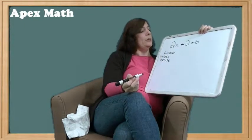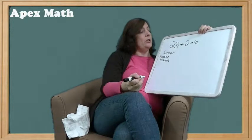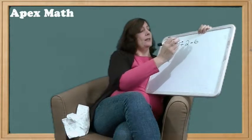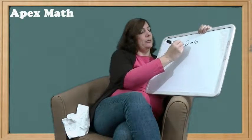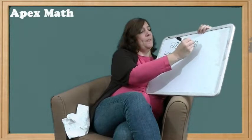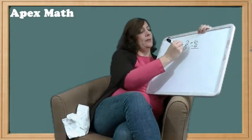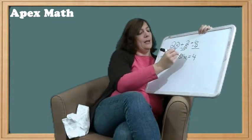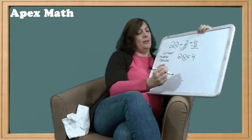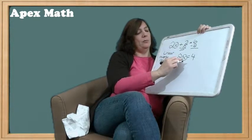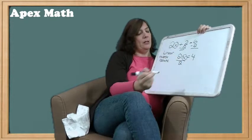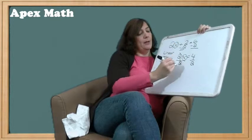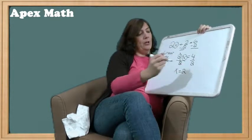So to solve for x here, we want to use the inverse operation. We always leave what's attached to the x to last, so we're going to get rid of the 2 first. It's a plus 2, so we're going to do minus 2. Whatever we do to one side, we do to the other. So we end up with 2x equals 4. And then again, we're solving for that x, so now we use the inverse operation. Since 2 is multiplied times x, the inverse operation would be to divide by 2. What we do to one side, we do to the other. So we end up with x equals 2.